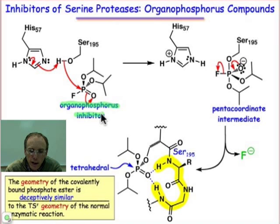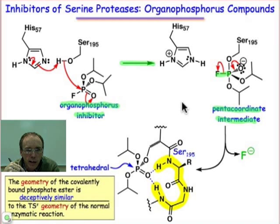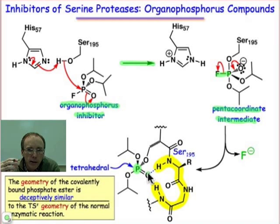The mechanism follows the normal course of action. There's an addition step that creates this penta-coordinated intermediate. There's a beta elimination step — we cause that phosphorus-fluorine bond to be eliminated. And then here's where deception basically takes place. What this enzyme is so good at is stabilizing the tetrahedral intermediate with that oxyanion hole, but here we have a tetrahedral geometry at phosphorus but no oxyanion.